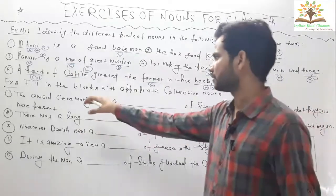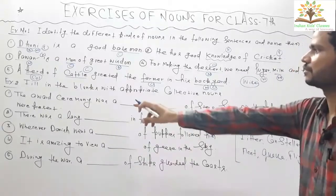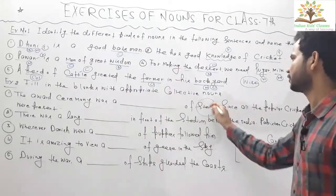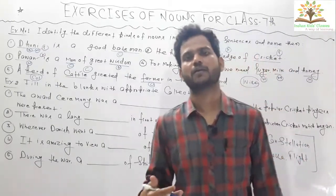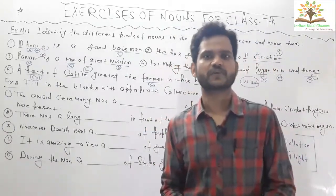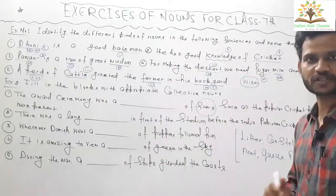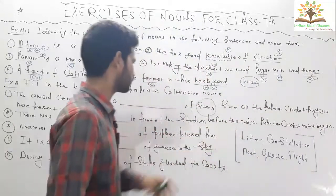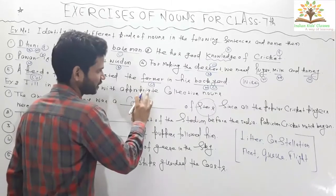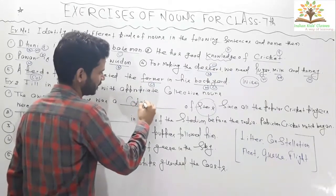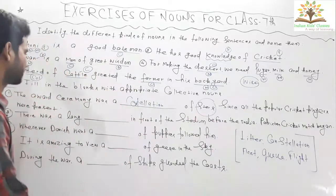Question number one: 'The award ceremony was a ___ of stars since all the popular cricket players were present.' A collection of stars is called a constellation. So you need to put constellation here because a collection of stars is called a constellation.